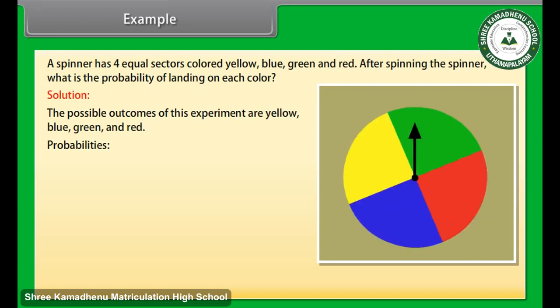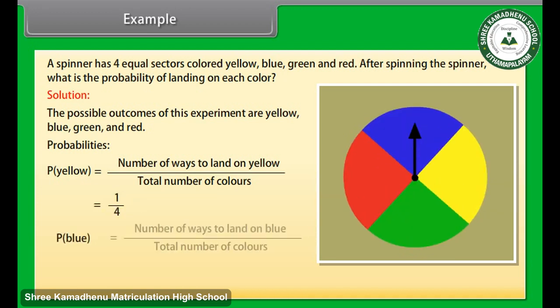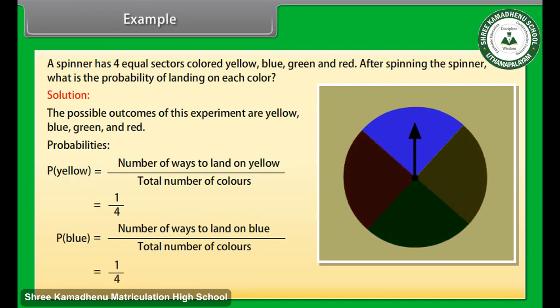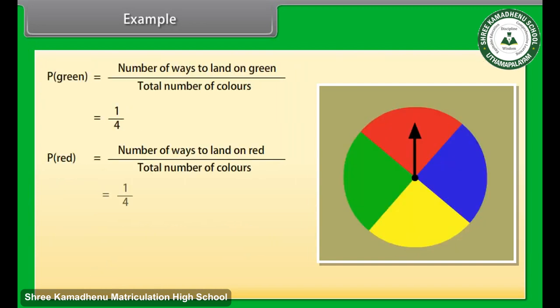Probability of landing yellow is number of ways to land on yellow by total number of colors. That is equal to 1 by 4. Probability of landing blue is number of ways to land on blue by total number of colors, that is equal to 1 by 4. Similarly, we will find the probability for green and red. And if we add all these probabilities, we will get 1.